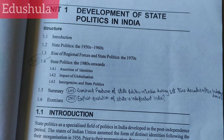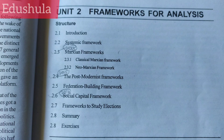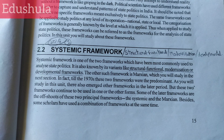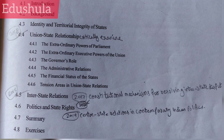Dominant features of state politics in India during the first two decades after independence. Explain the evolution of the state in independent India. From Unit 2: Marxian Frameworks, Post-Modernist Frameworks, Social Capital Framework, Systematic Framework. From Unit 4: Union-State Relationship Critically Examined.